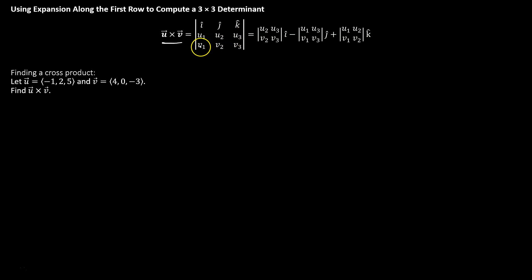And the third row will be every component from the v vector: v1, v2, v3.